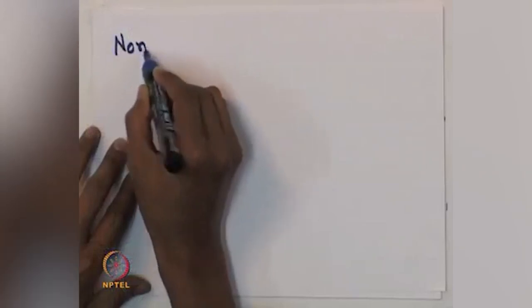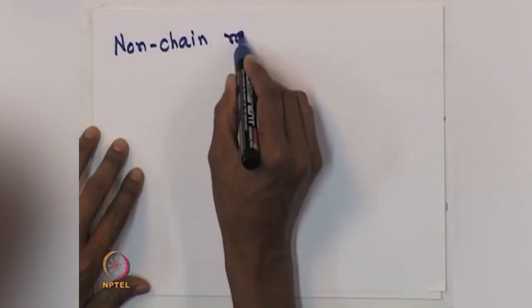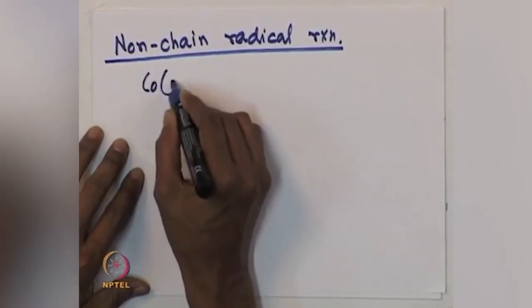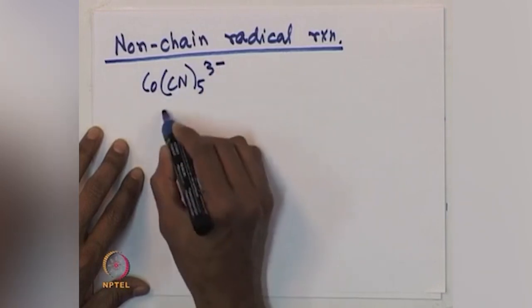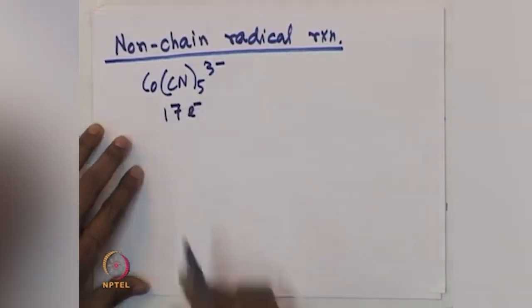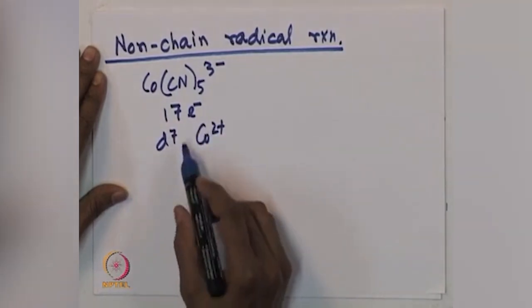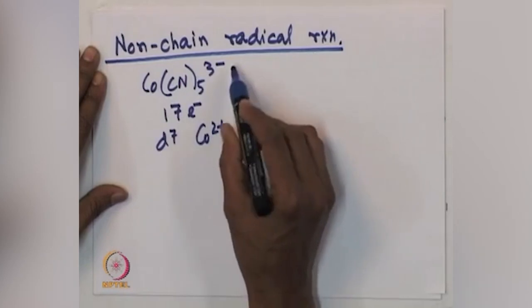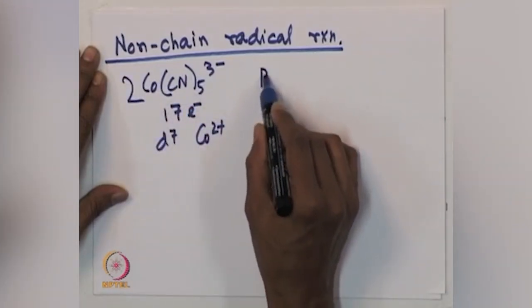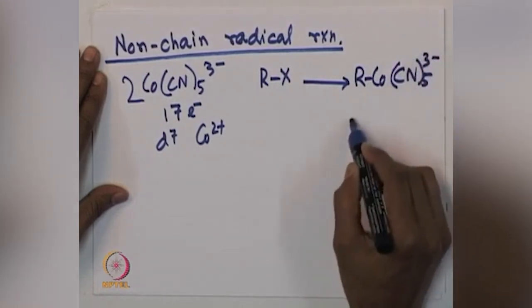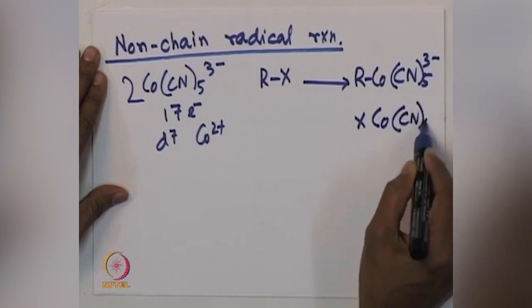Let us take a real-life example. We are discussing the non-chain radical mechanism. What could be a better complex than cobalt for an odd-electron species? If you do the electron count, you will find that this is a 17-electron species. It is a d7 cobalt(2+) — do the electron count, it will be d7.